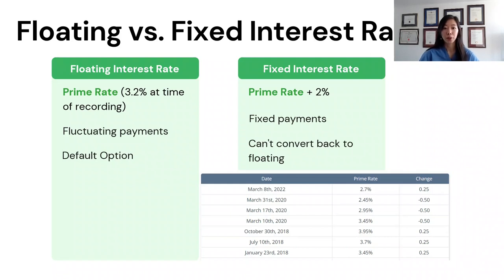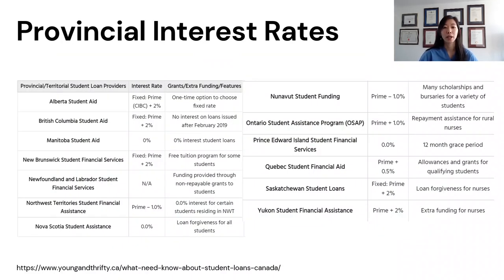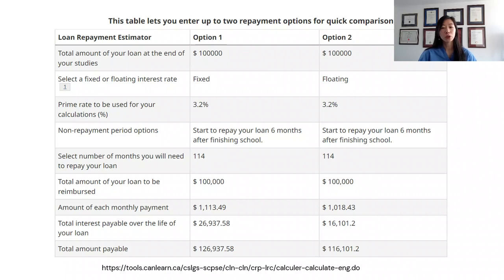If you're in Ontario, there's only one type of option for the provincial portion, which is prime rate plus 1%. If you're in a different province, your provincial loan interest rates may differ, so I would pause the video here and find your own province's rates. There's also a good calculator on the Canada.ca website — I've linked it here — which lets you play around with the numbers to see what option works best for you.